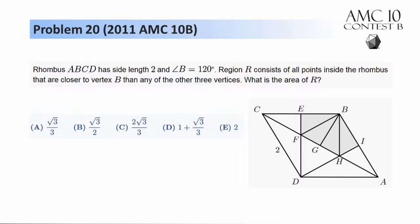Hey everyone, this is Eric Wu. Today we're on to problem 20 on the 2011 AMC-10B. The problem says that rhombus ABCD has side length 2 and angle B is 120 degrees. Region R consists of all points inside the rhombus that are closer to vertex B than any of the other three vertices.